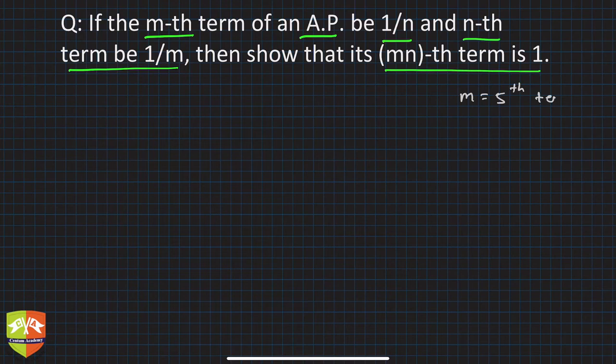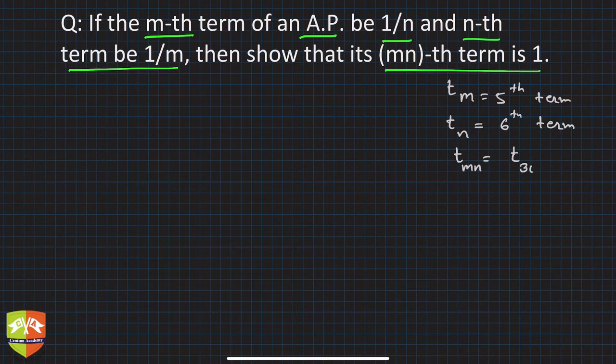So t_m will be 5th term, and let's say n is equal to 6, so it will be 6th term, right? So what will be t_mn? That is, mn-th term will be m into n, that is 30 in this case.